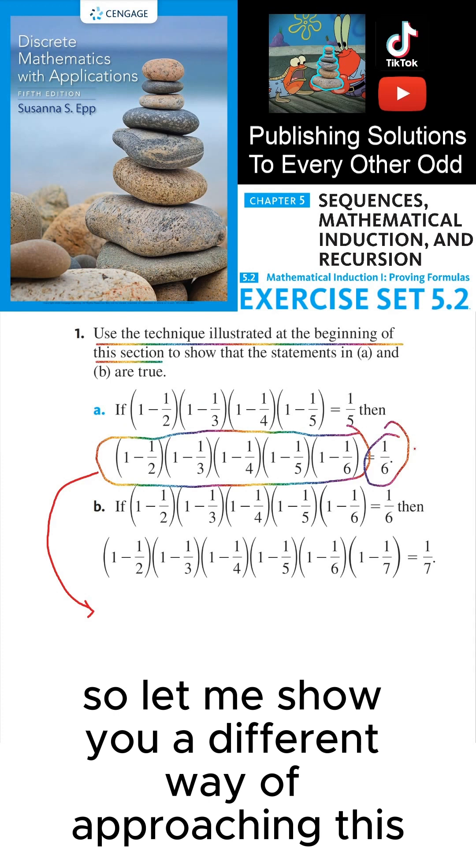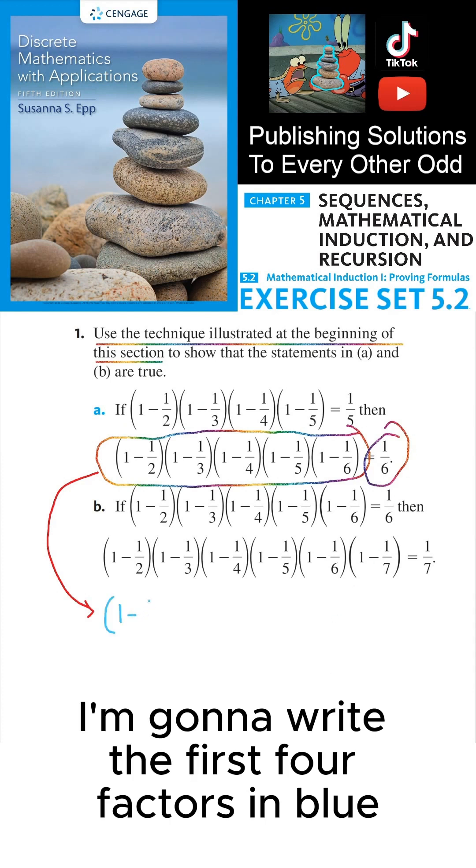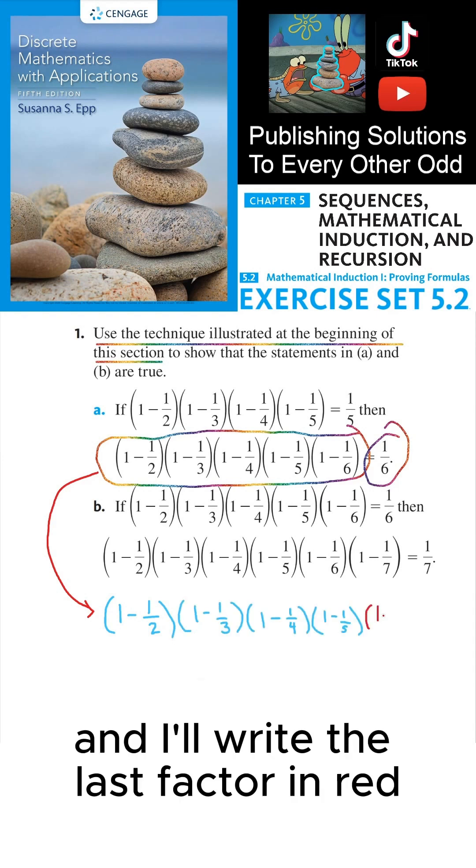So let me show you a different way of approaching this. I'm going to write the first four factors in blue and I'll write the last factor in red.